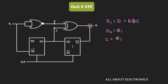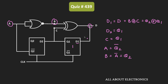The A input is equal to Q2 bar. The B input is the output of a NOR gate used as an inverter, so B = Q2. That means C = Q1 and B = Q2. Therefore D = B XOR C = Q2 XOR Q1. So D1 = Q2 XOR Q1 and D2 = Q1.